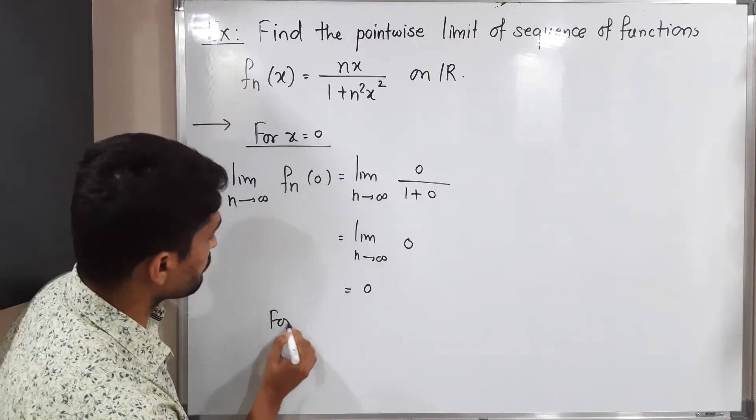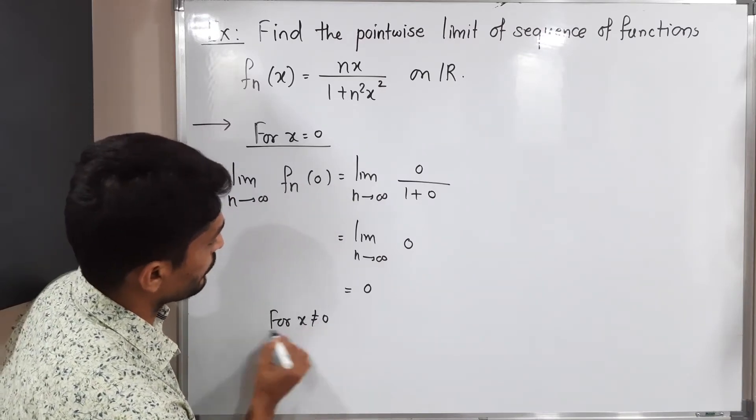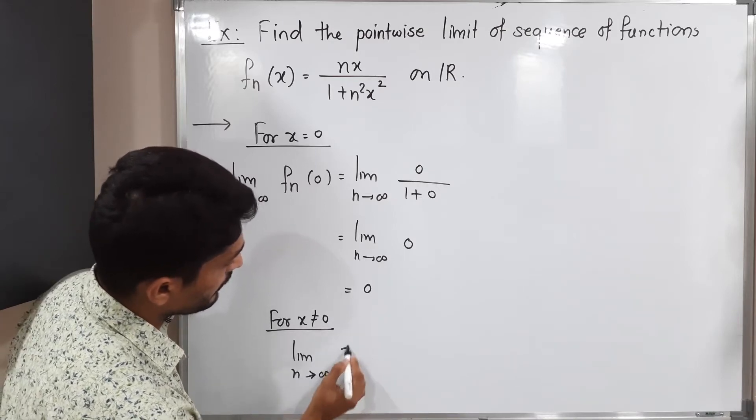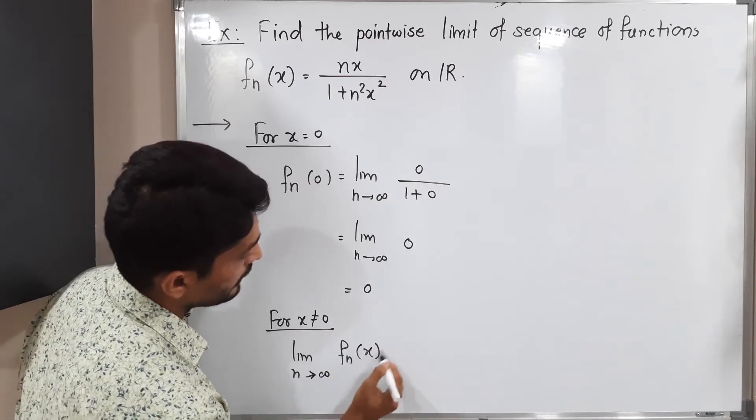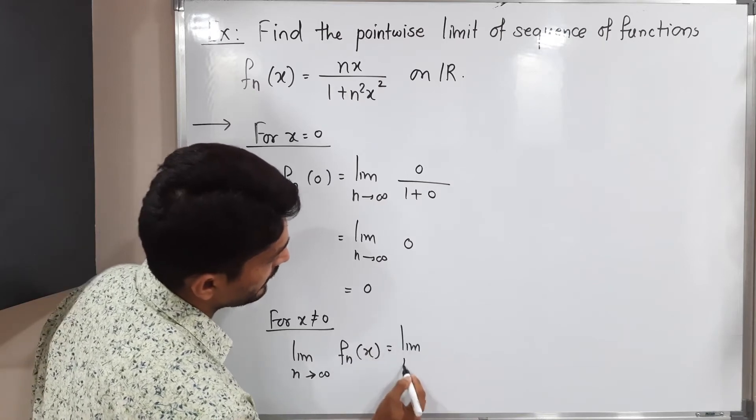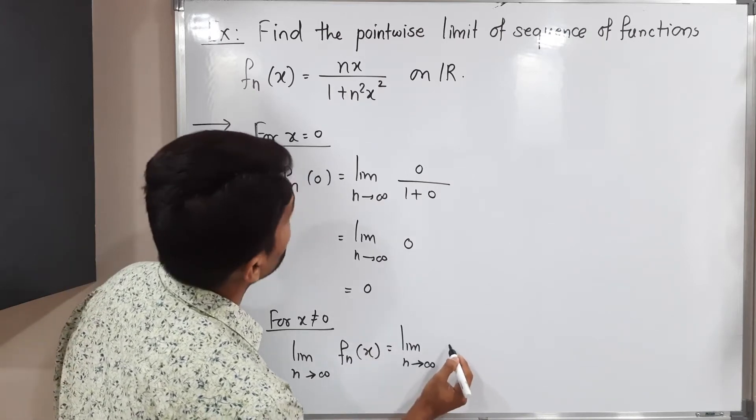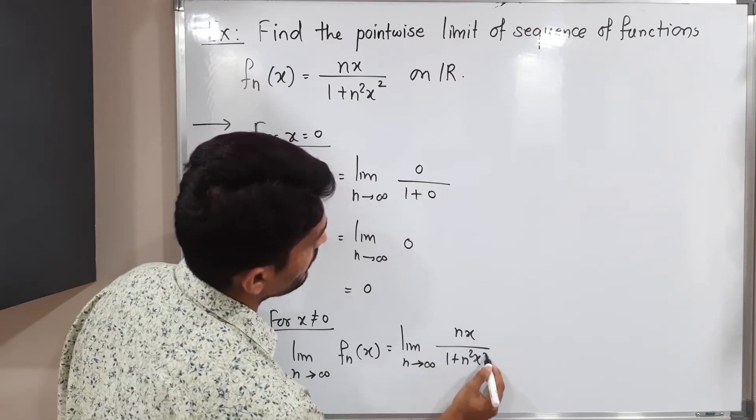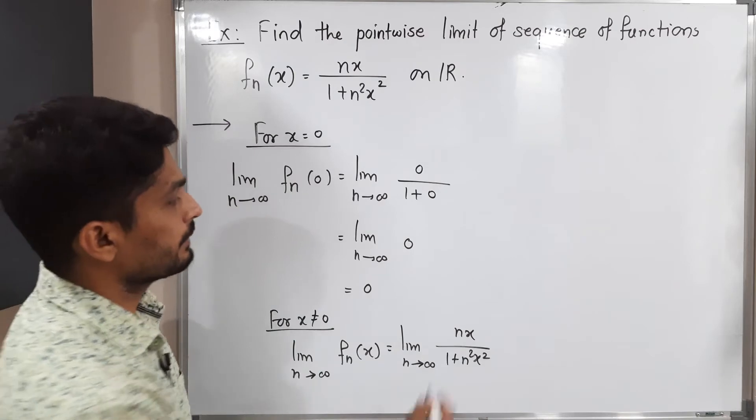Let us discuss the second case, obviously when x is not equal to 0. Let us see what will happen. I'm applying the limit again. Limit as n tends to infinity of f_n(x). Let us put the value of f_n(x): limit as n tends to infinity, f_n(x) is nx divided by 1 plus n²x².